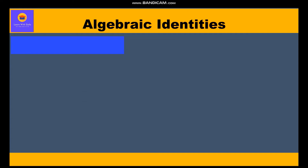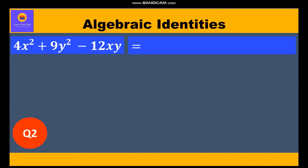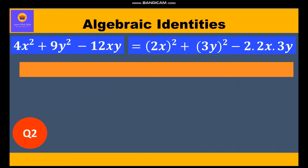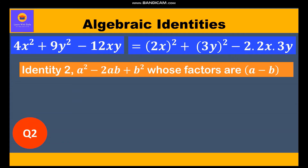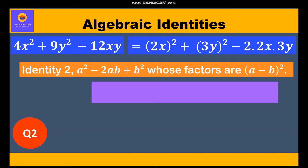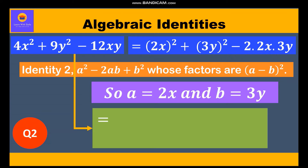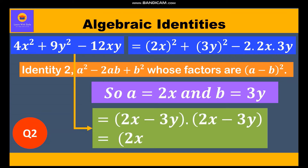Question 2: Factorize 4x² + 9y² - 12xy. Writing in the form of an identity: (2x)² + (3y)² - 2·(2x)·(3y). This matches identity two, where a = 2x and b = 3y. Therefore the factors are (2x - 3y)(2x - 3y) = (2x - 3y)².